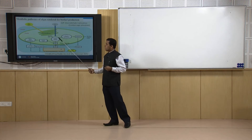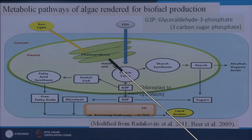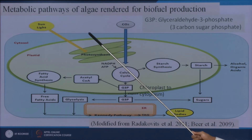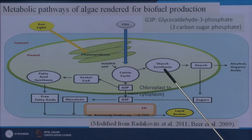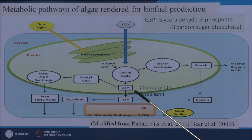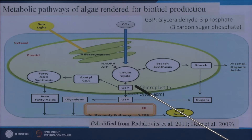Microalgae have chlorophylls, and chloroplasts are the center where photosynthesis takes place. In the chloroplasts, sunlight drives photosynthesis. Pigments in the plastid capture light photons and produce NADPH and ATP. This ATP helps capture CO2, and through the Calvin cycle, starch synthesis takes place producing 6-carbon sugar. Part of the 6-carbon sugar is reduced to 3-carbon sugar — G3P, glyceraldehyde-3-phosphate — which is produced in the plastid in the presence of sunlight.